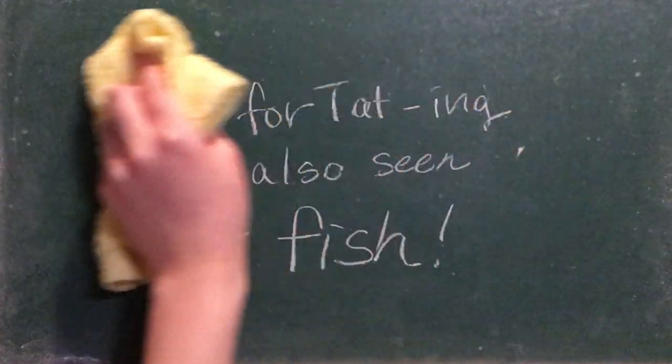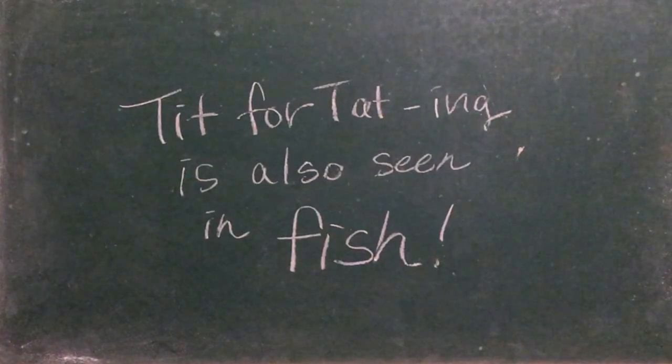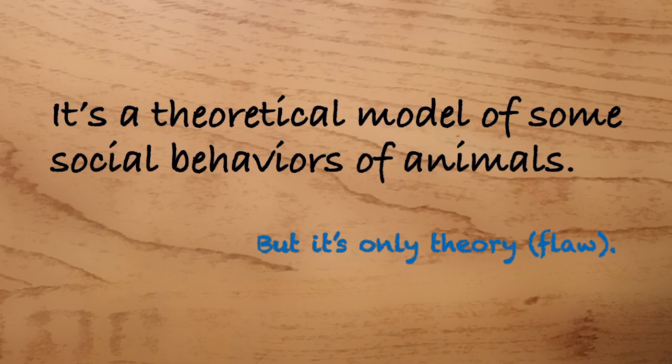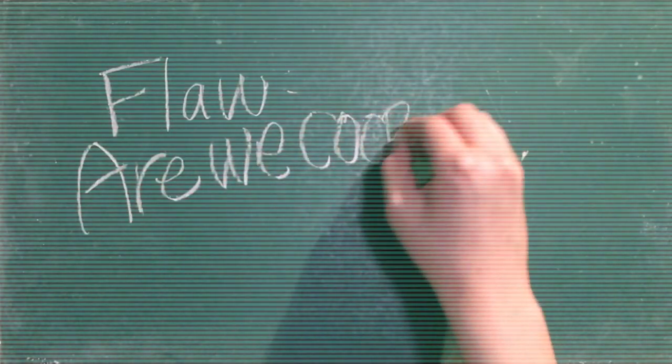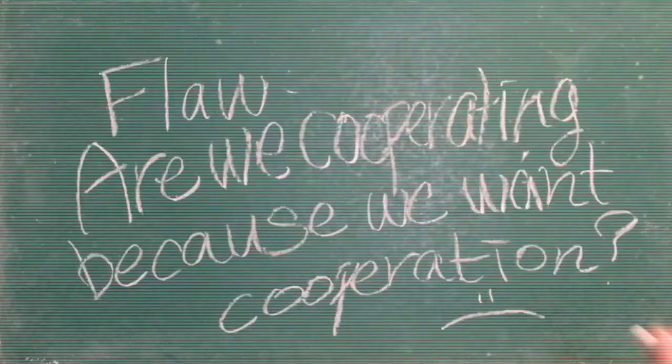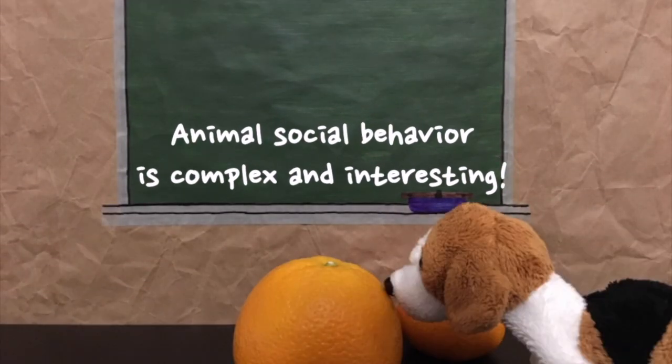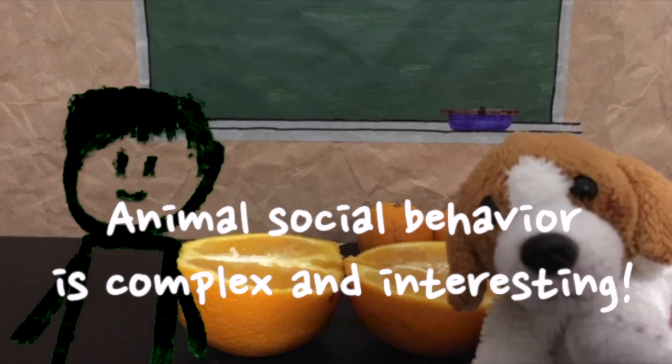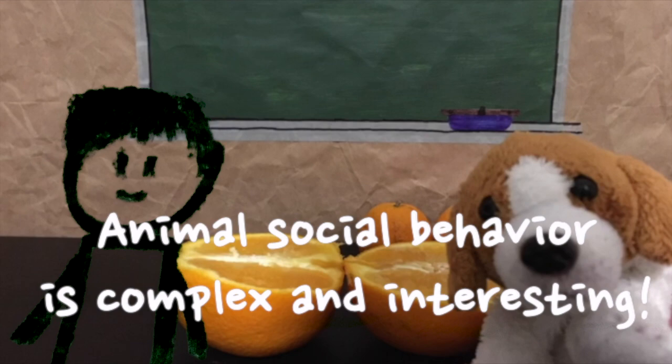Tit for tatting is also seen in fish, such as stickleback fish and guppies. So this strategy is not just for humans. Although not always perfect, this is a strategy we can use to survive. And we have seen one way of understanding social behavior, but social behavior is more complex than this.